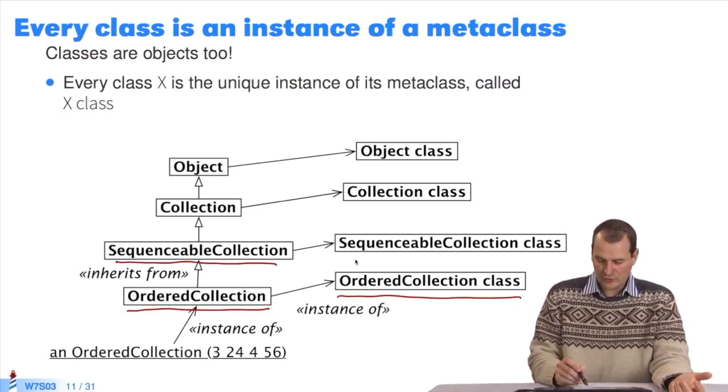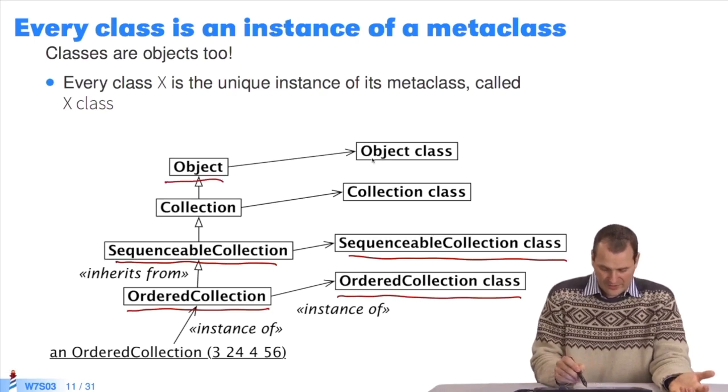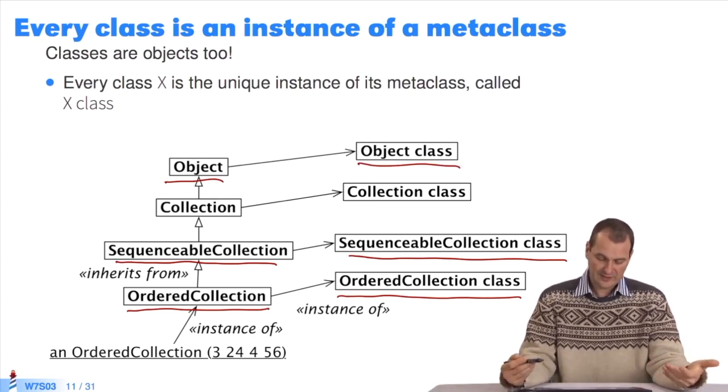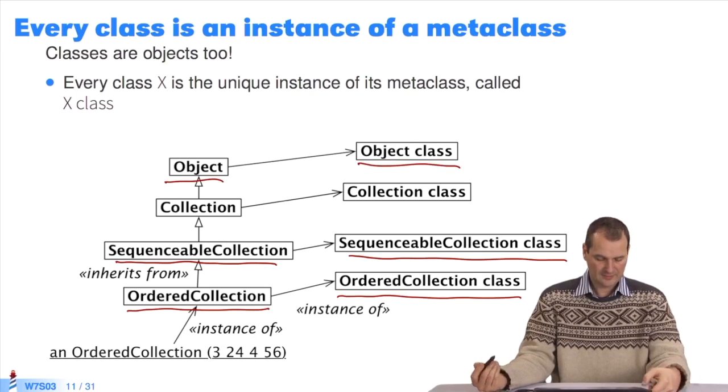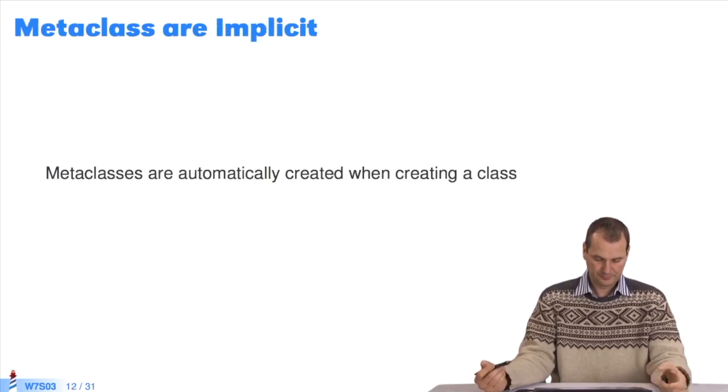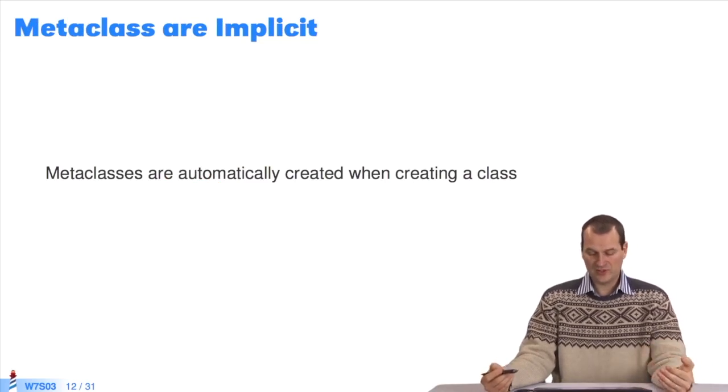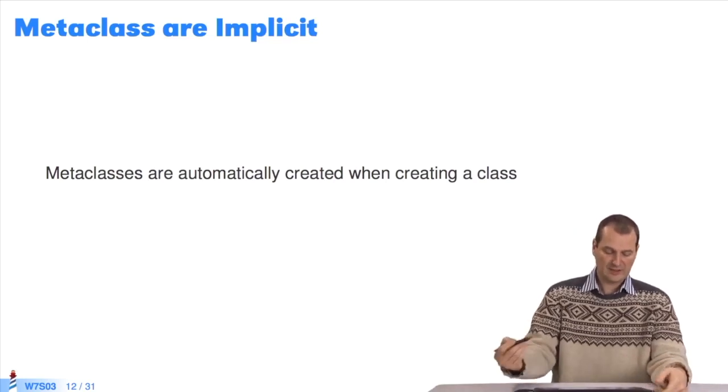We see that the ordered collection class is an instance of the class ordered collection class. It works the same way for the sequenceable collection class and the object class with the class object class. All classes are instances of another metaclass, which takes the same name followed by class. Metaclasses are created automatically when we create a class. We send a new message to the metaclass to create the class.